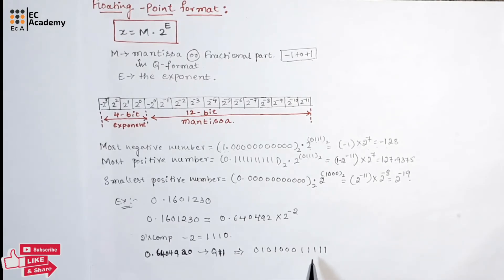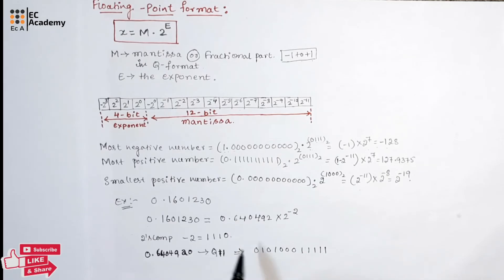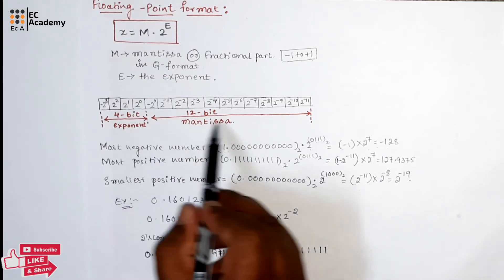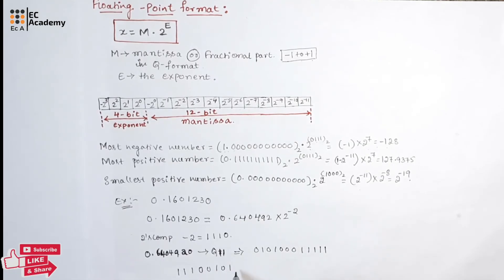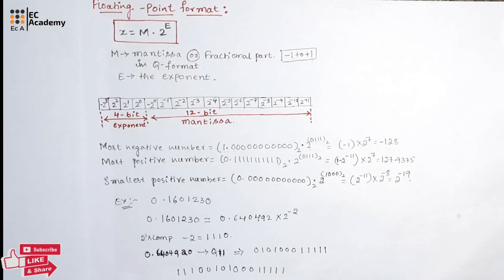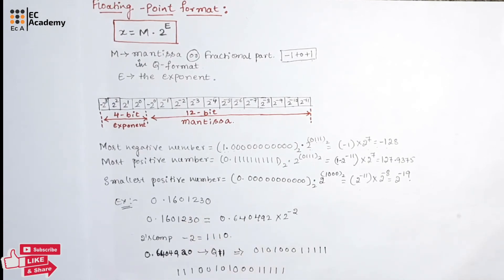This is the mantissa part and this is the exponent part. We can cascade these two values to get the floating point format. So we write 1, 1, 1, 0, 0, 1, 0, 1, 0, 0, 0, 0, 1, 1, 1, 1. This is the floating point format of the given decimal number.